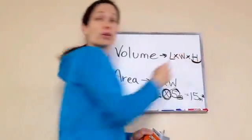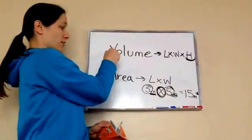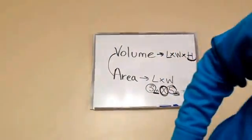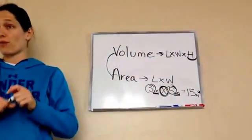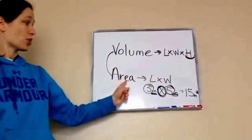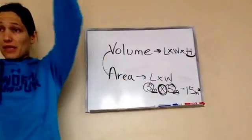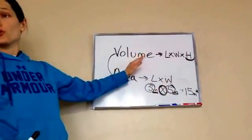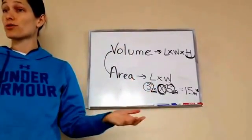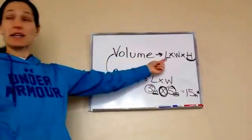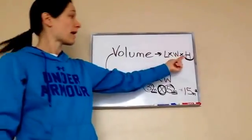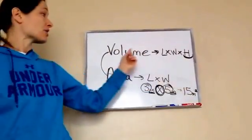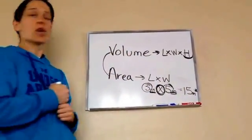An example of area would be if your mom or dad went to the carpet or tile store and wanted to cover the bathroom floor — you'd use area because you're just covering the ground, not building something up high. You measure length and width to find area. Volume is like an aquarium: how much water do I fill it with? You take the length, width, and height of the aquarium, and that tells you how much volume of water you need.